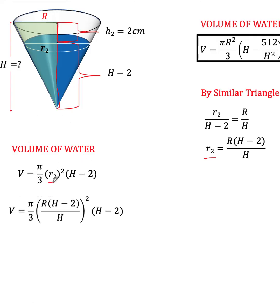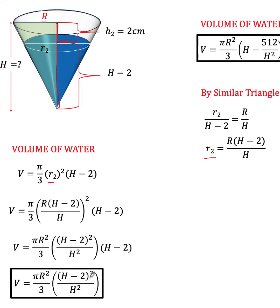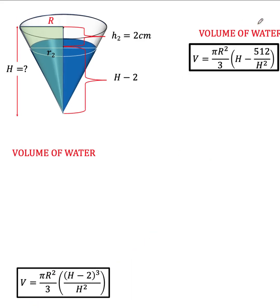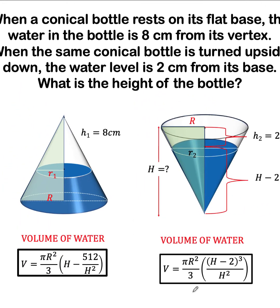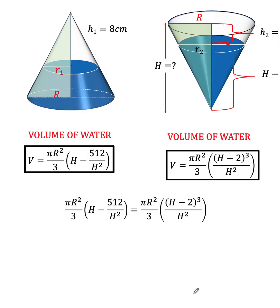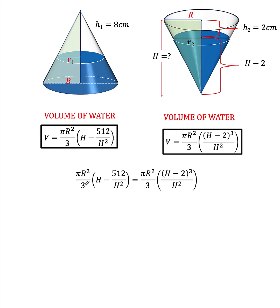Substituting and simplifying: r squared times (H minus 2) squared over H squared, and then times (H minus 2) gives (H minus 2) to the third. Comparing this with the volume expression from the first cone, these two volumes represent the same volume of water, so we equate the two expressions. There is a common factor of πr²/3 on both sides, and dividing both sides by that factor leaves: H minus 512/H² on the left, and (H minus 2)³/H² on the right.